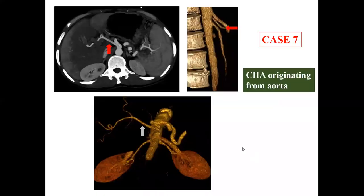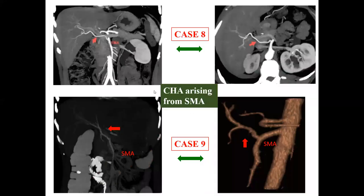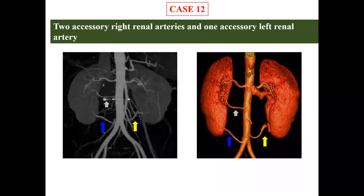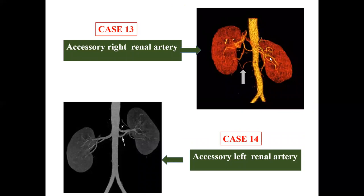In case 7, a common hepatic artery originating from the aorta is demonstrated, also shown on volume rendering CT. In case 8, the common hepatic artery is seen arising from the SMA, also demonstrated in case 9. Cases 10 and 11 show the right hepatic artery originating from the celiac trunk, while case 11 also shows the right hepatic artery originating from the aorta. In case 12, two accessory right renal arteries and one accessory left renal artery are noted. Case 13 shows an accessory right renal artery and case 14 shows an accessory left renal artery.